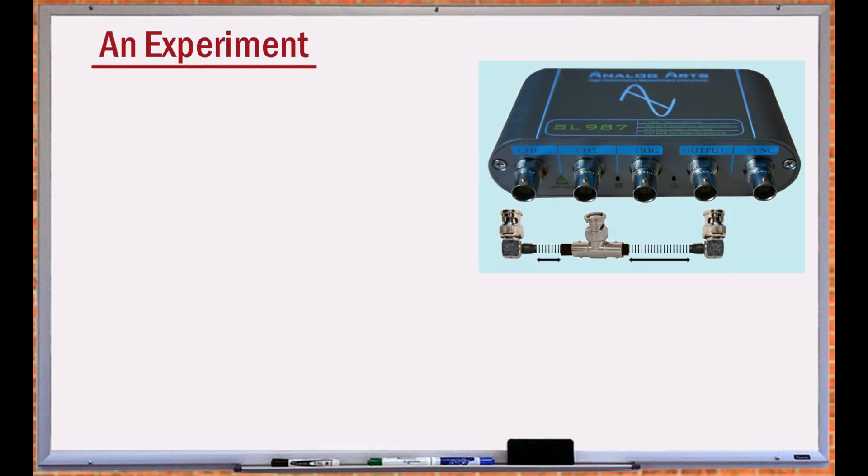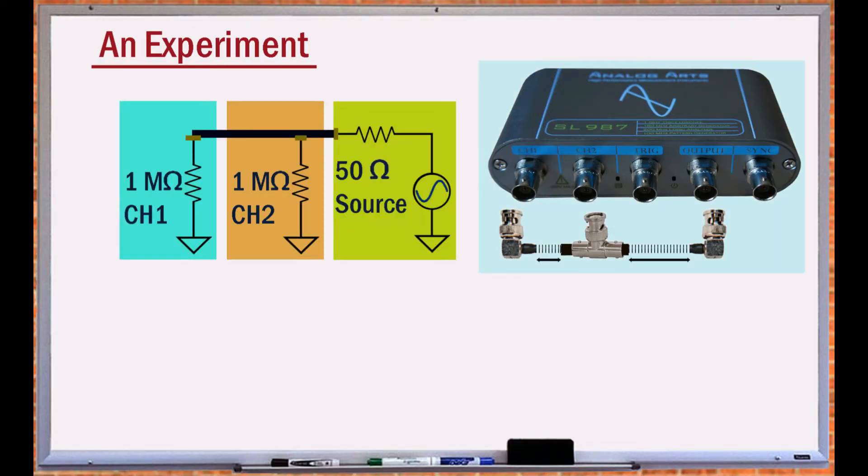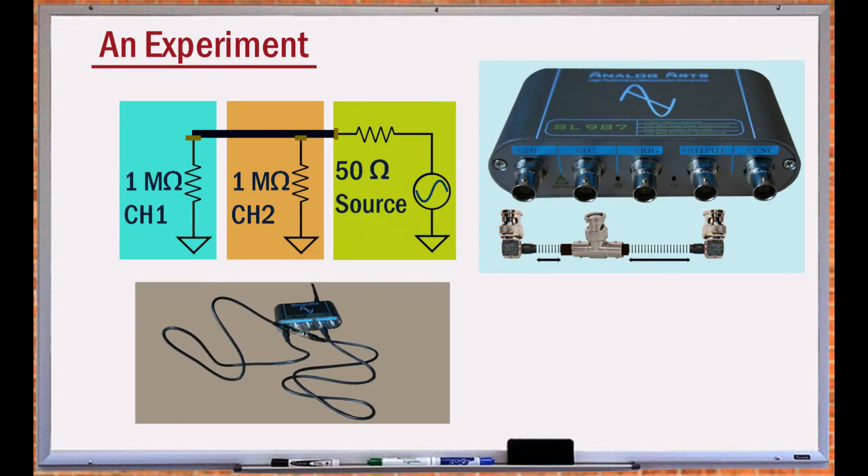To demonstrate the effect of an improper termination, let's connect the output of a signal generator with a source impedance of 50 ohms to one end of a coax, and connect the other end of the coax using a T-connector, to another cable.